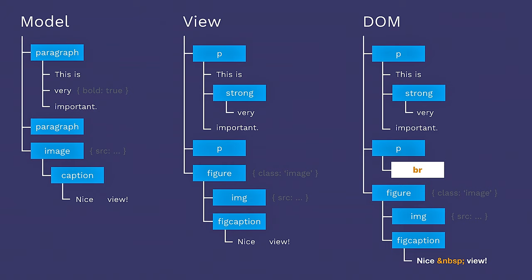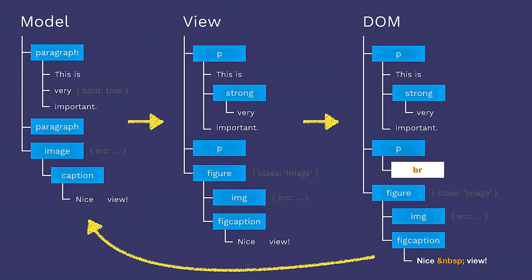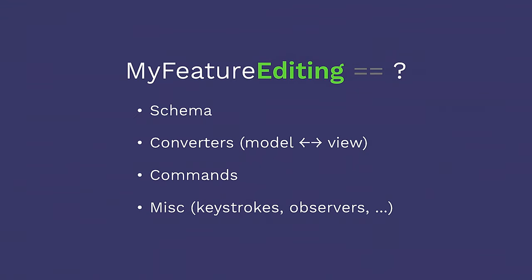At the DOM stage, CKEditor 5 adds things like BRs in empty paragraphs so they have non-zero height, and renders subsequent spaces as a combination of non-breaking spaces and normal spaces. As a plugin author, you only live between the model and the view, so you really don't have to care about the DOM and its quirks, and it makes implementing features much easier. How does the data flow look? The user interacts with the DOM — for instance, clicks a button — you listen to this event, you change the model, the model is converted to the view, and then the view is automatically rendered to the DOM. And that's it.